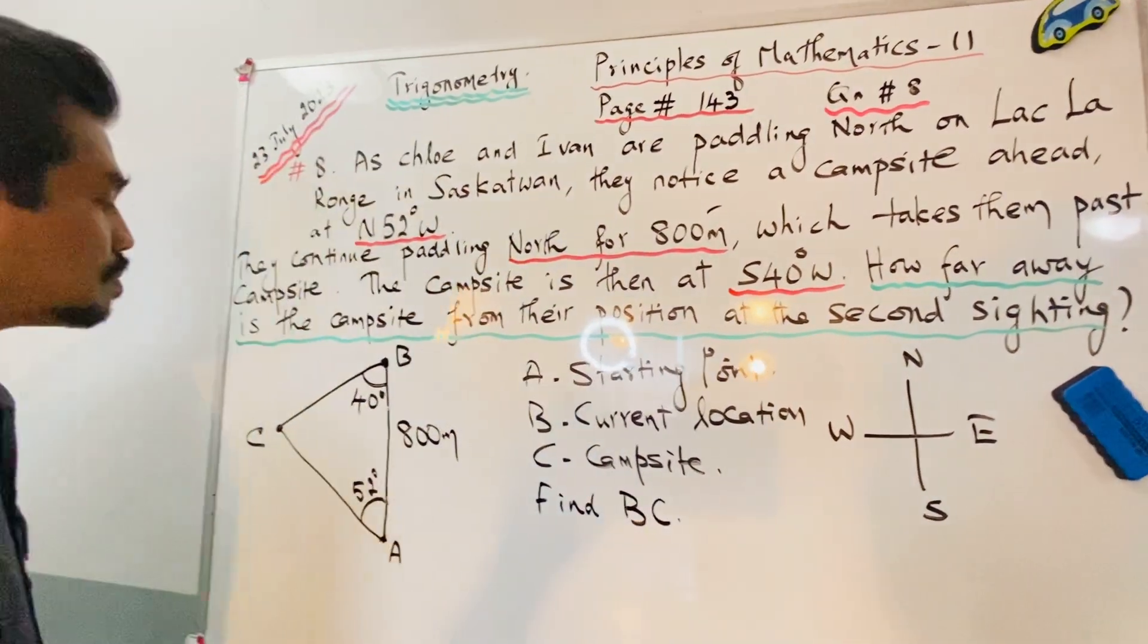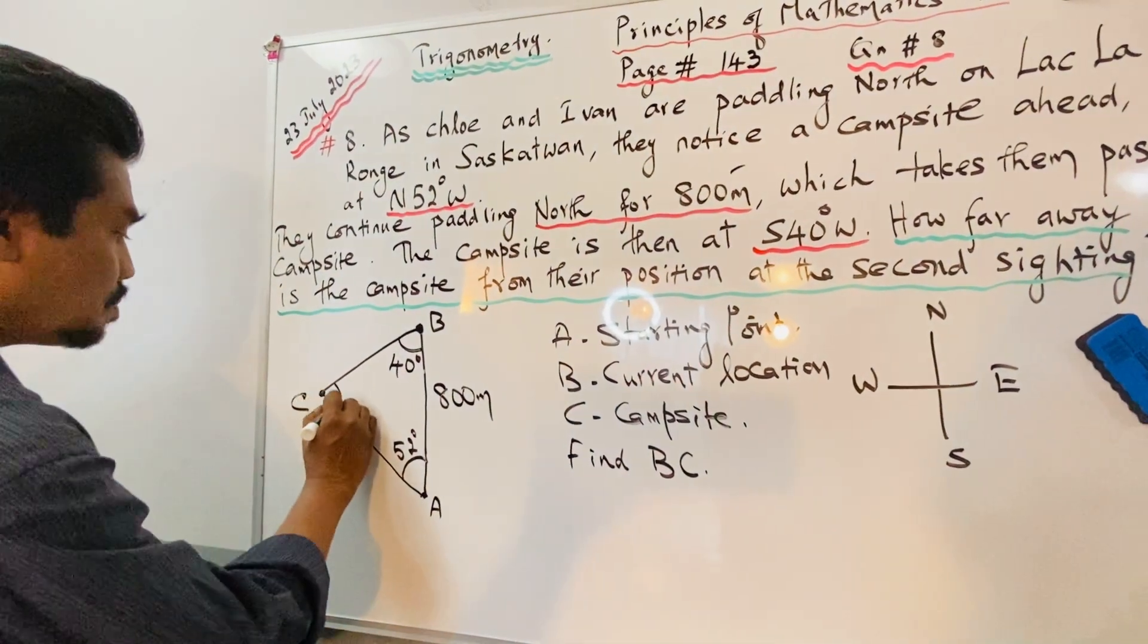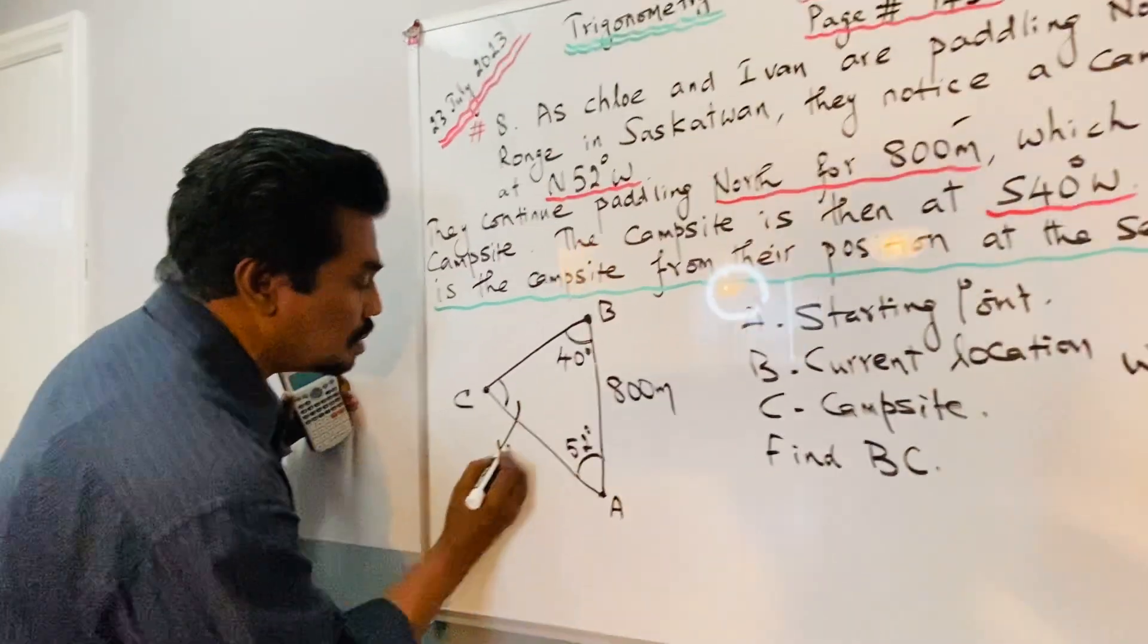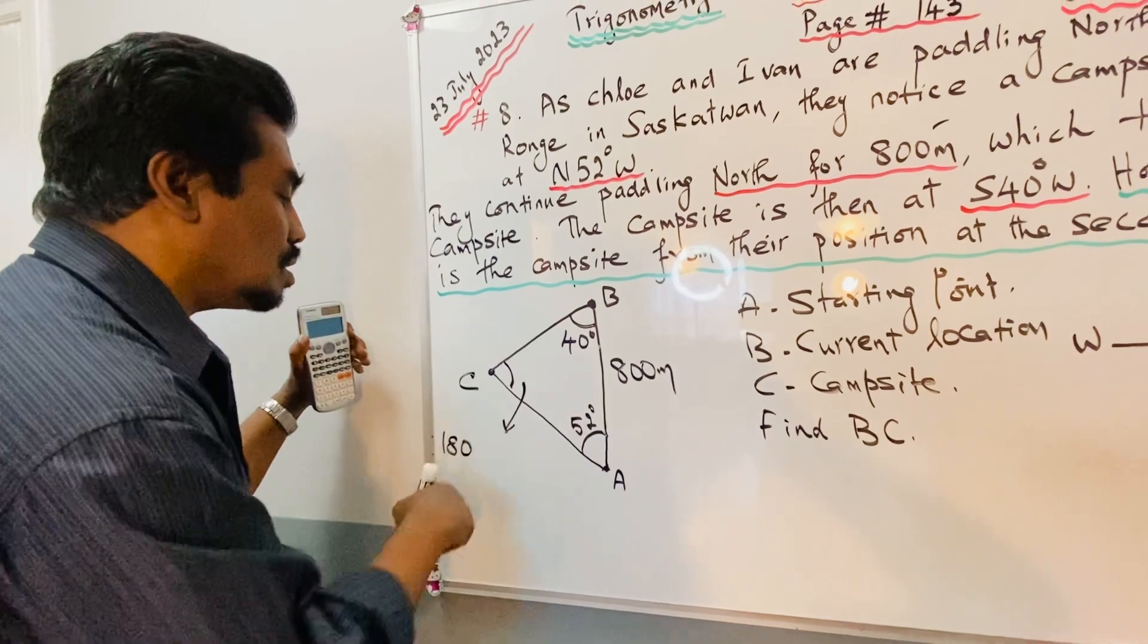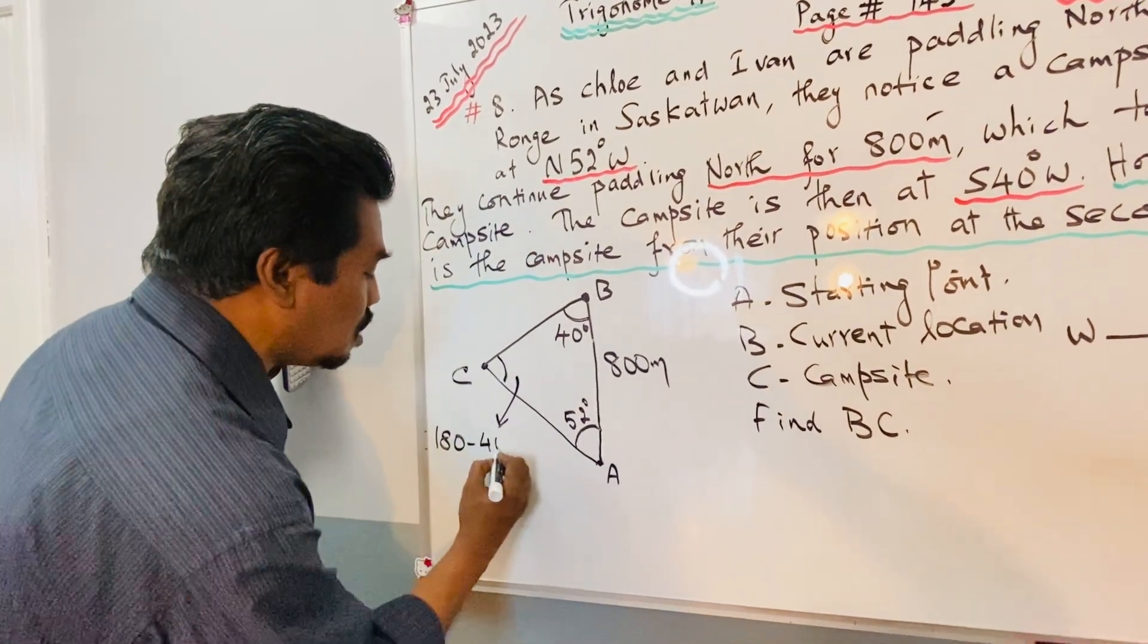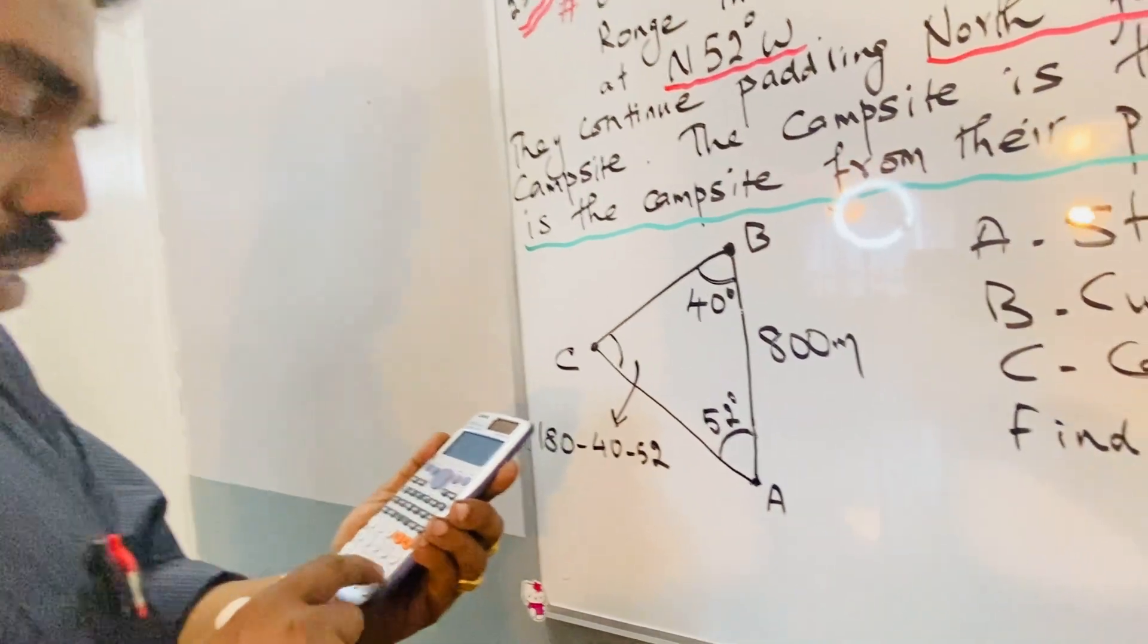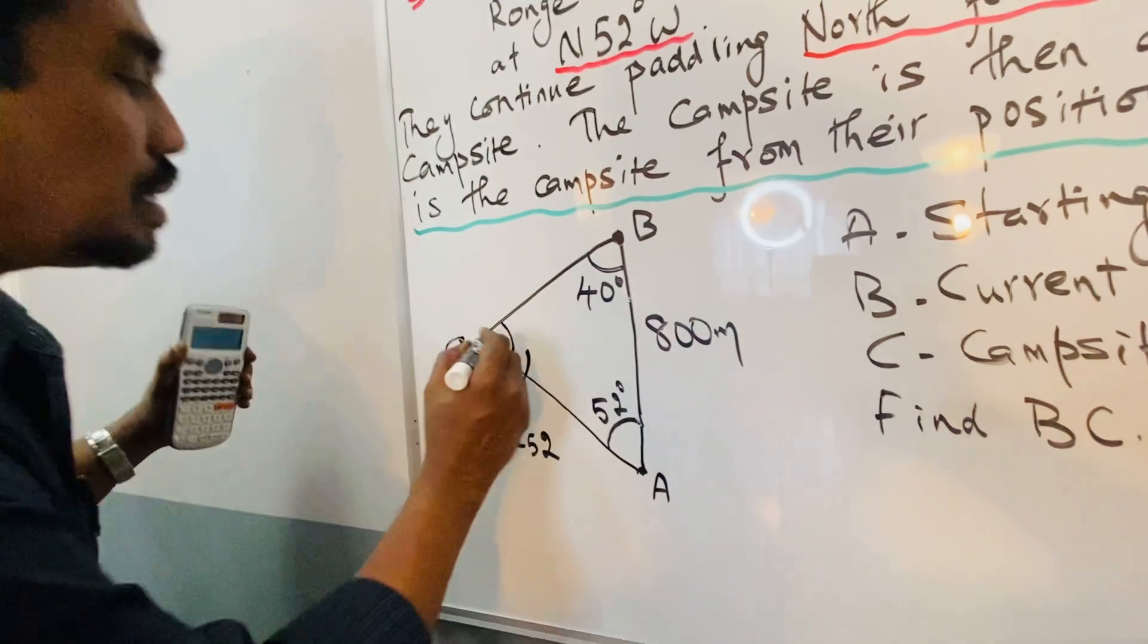Now we have to find this angle also, because then only we can apply the sine law. This angle can be calculated using trigonometry. In a triangle, all angles are supplementary, so 180 minus 40 minus 52 will be equal to 88 degrees.